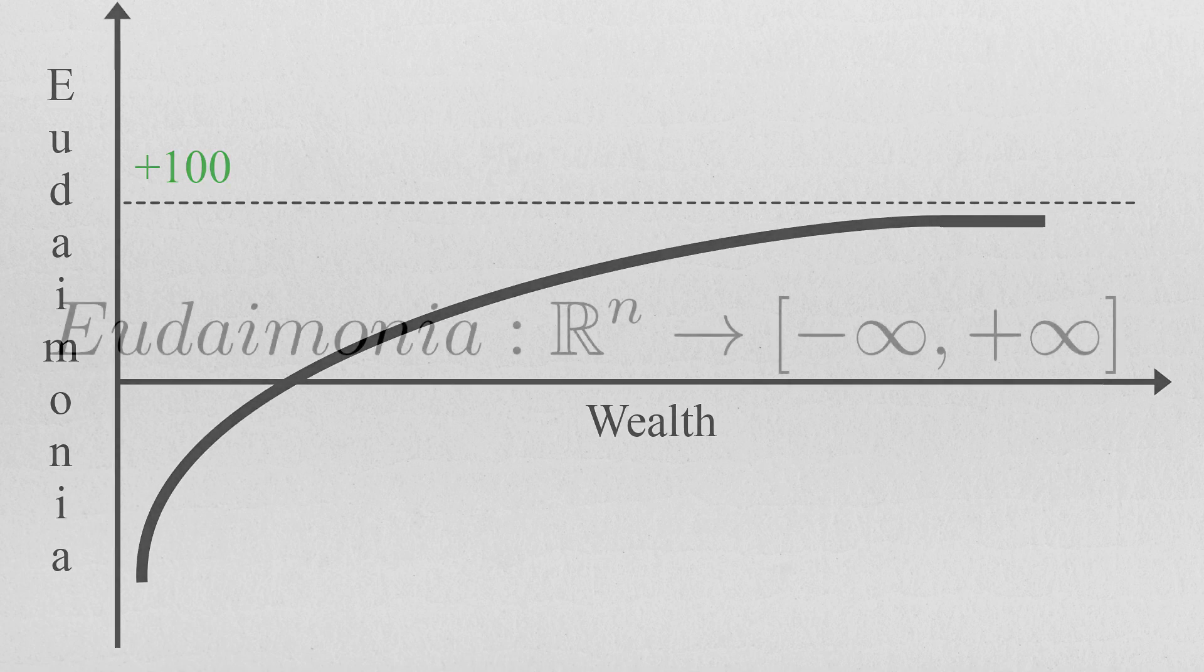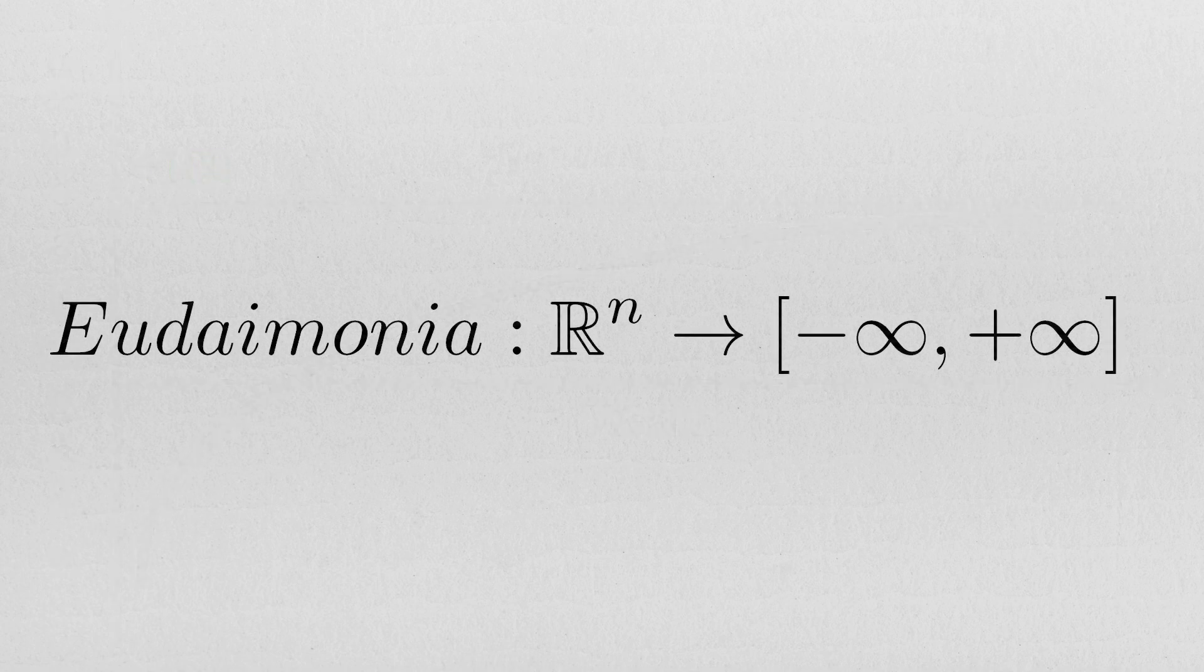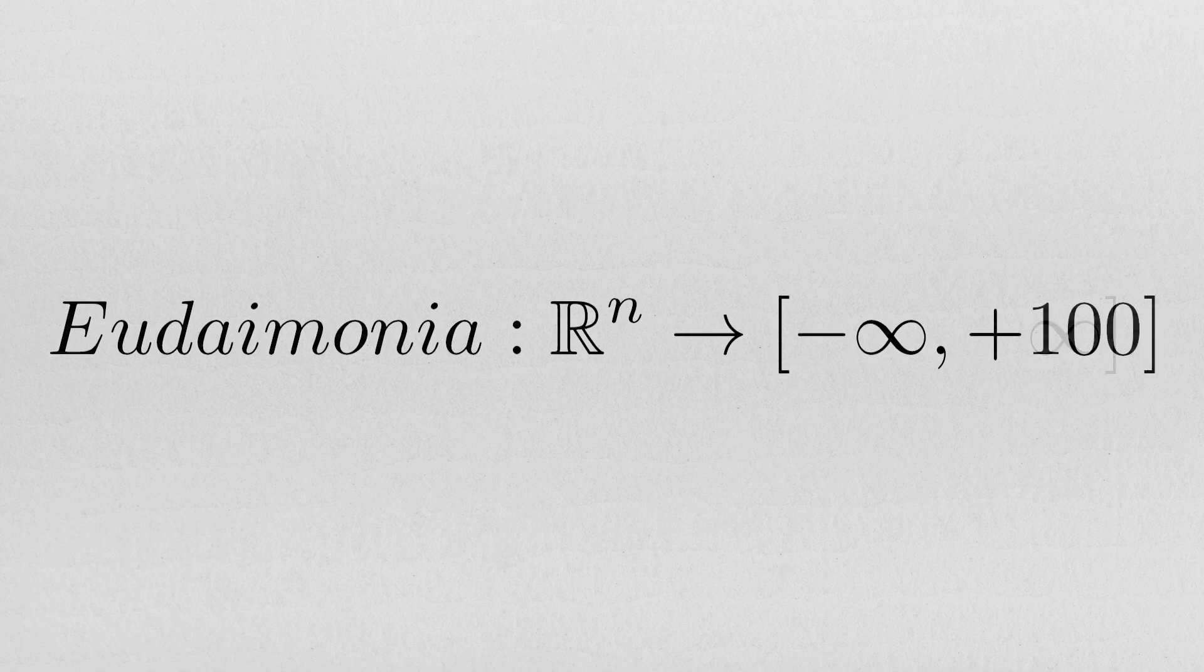For what concerns our framework, even if we do bound individual utility from above, we do not choose to impose directly the law of diminishing marginal utility in the definition of eudaimonia because we believe it to be superfluous,